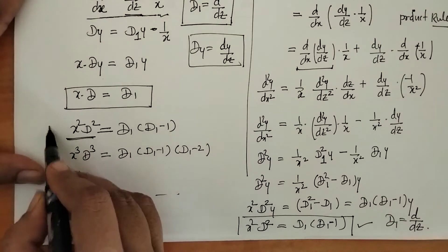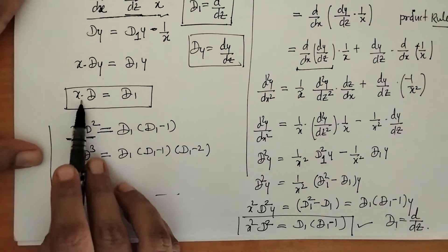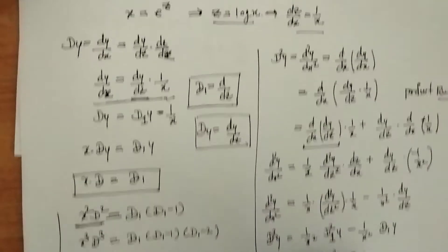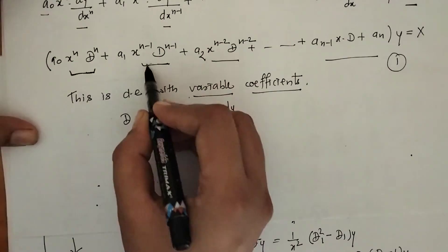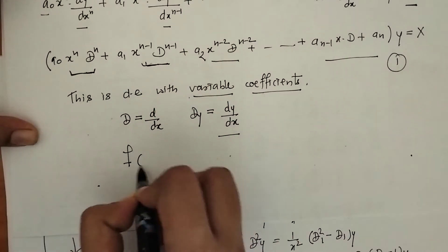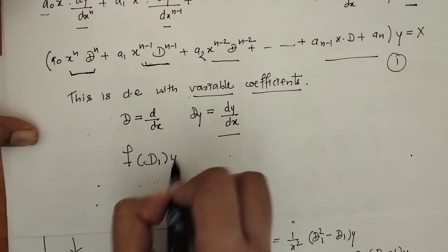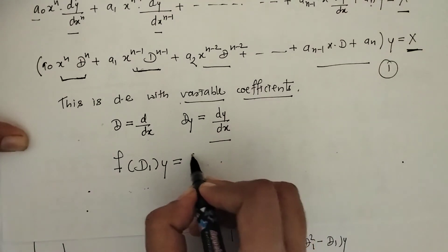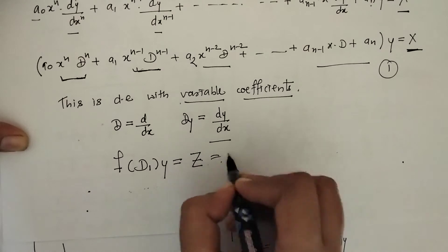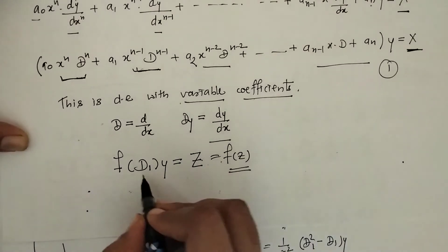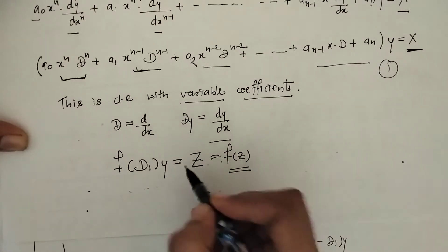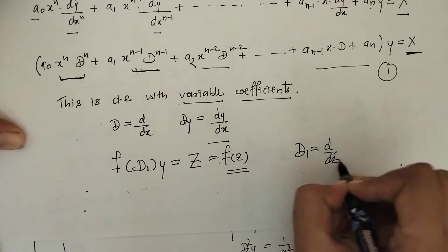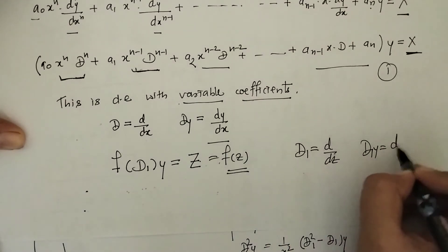So yes, we have found the values of xD, x squared D squared, and so on. By substituting all these values into the given differential equation, we will get a new differential equation in variable z. Here x also gets replaced, so the right-hand side becomes a function of z. This differential equation is now converted into variable z, where D1 equals d/dz.